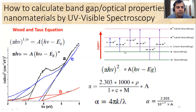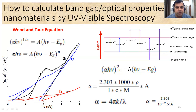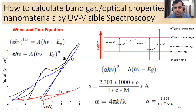I am going to show you a very important calculation about the band gap and optical properties of nanomaterials using a very simple technique called UV-visible spectroscopy. UV-visible is one of the electromagnetic radiations in which electronic transitions occur. These transitions may be from sigma to sigma-star, pi to pi-star, n to sigma-star, or n to pi-star.